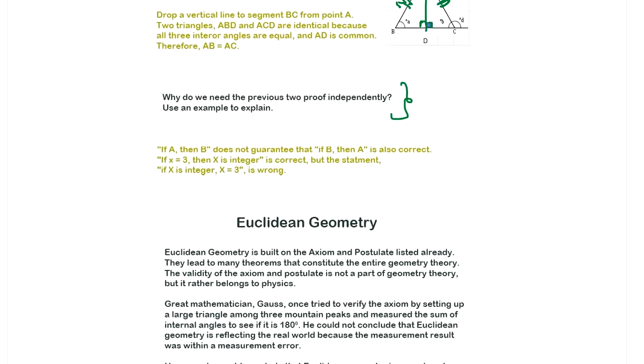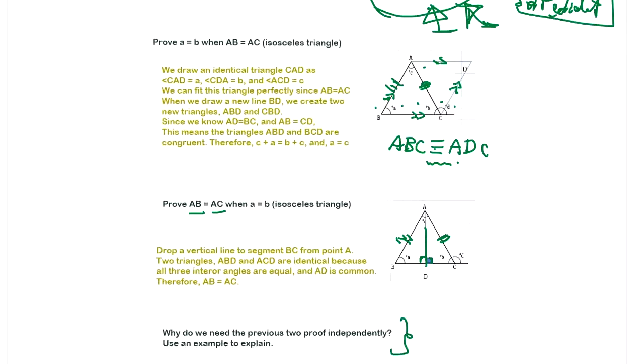So why do we need the previous two proofs independently? Use an example to explain. If A then B does not guarantee that if B then A is also correct. If X is 3, then X is integer is correct. But the statement X is integer. So let's see. Here we have to prove the opposite. If angle is same, then lengths are same. If lengths are same, then angles are same.